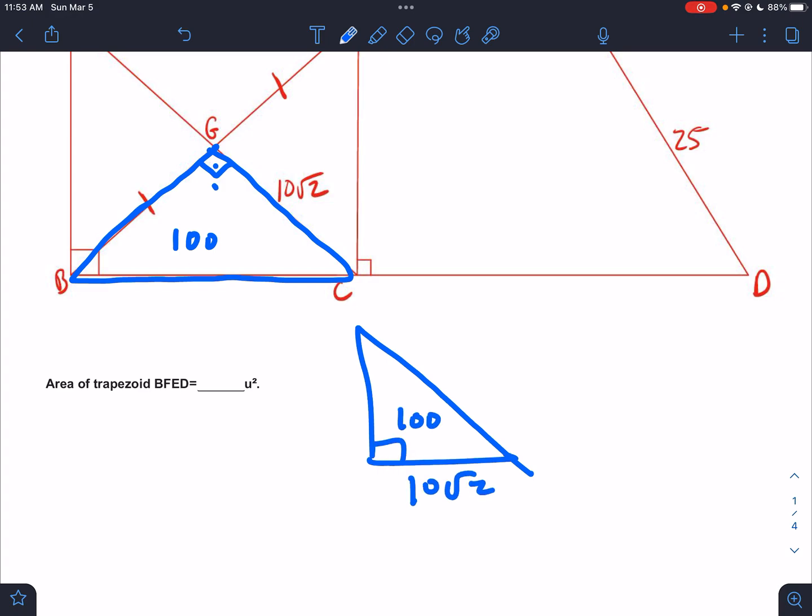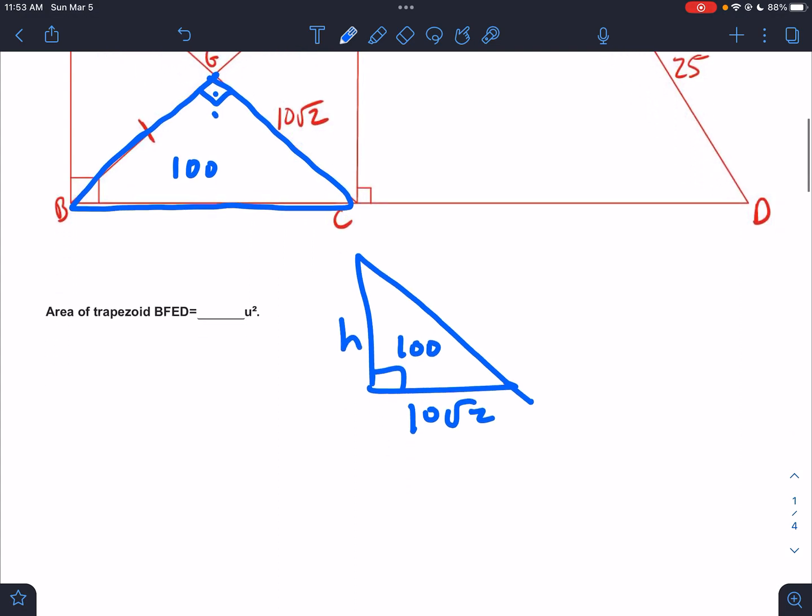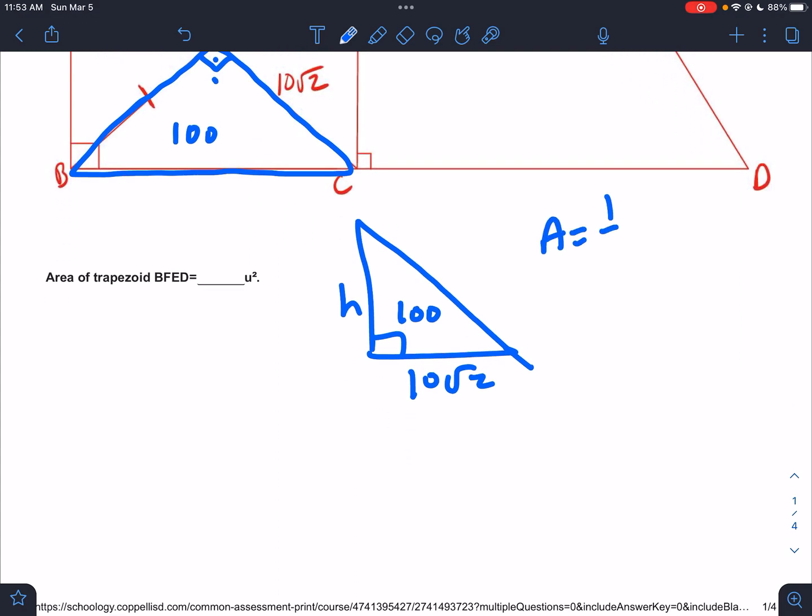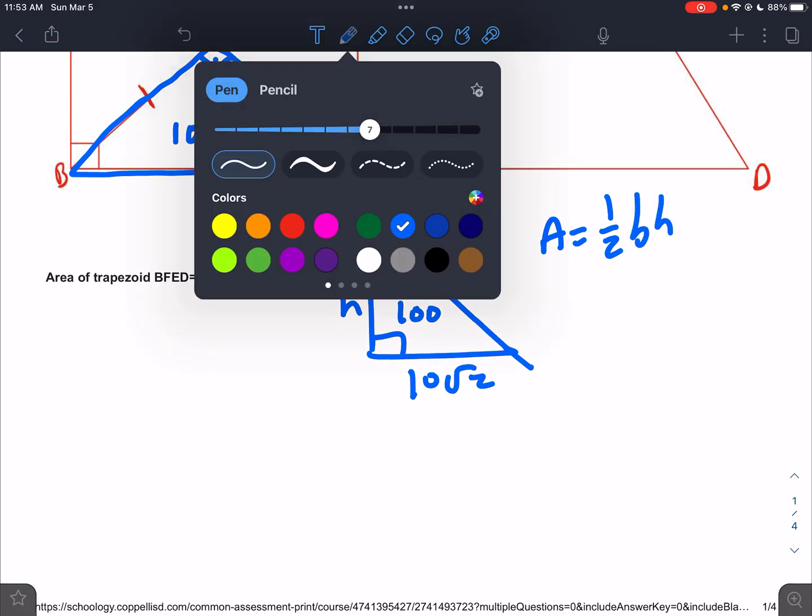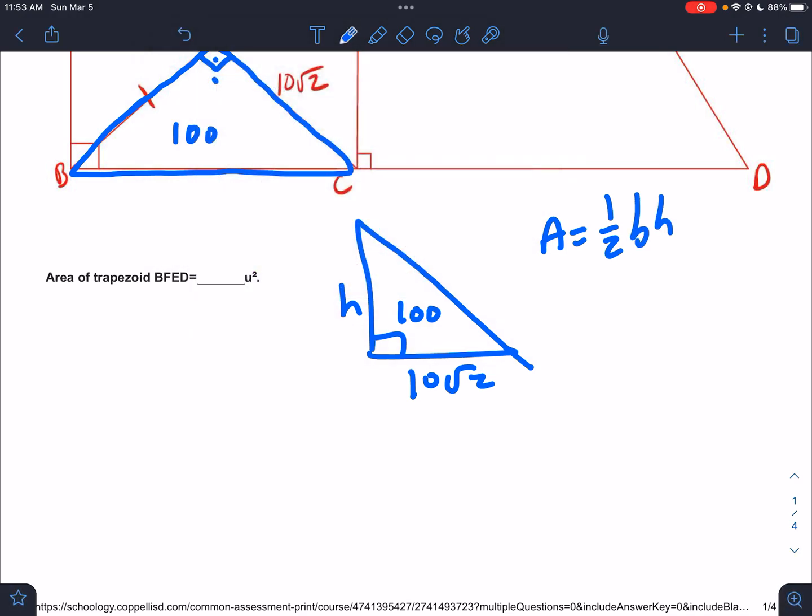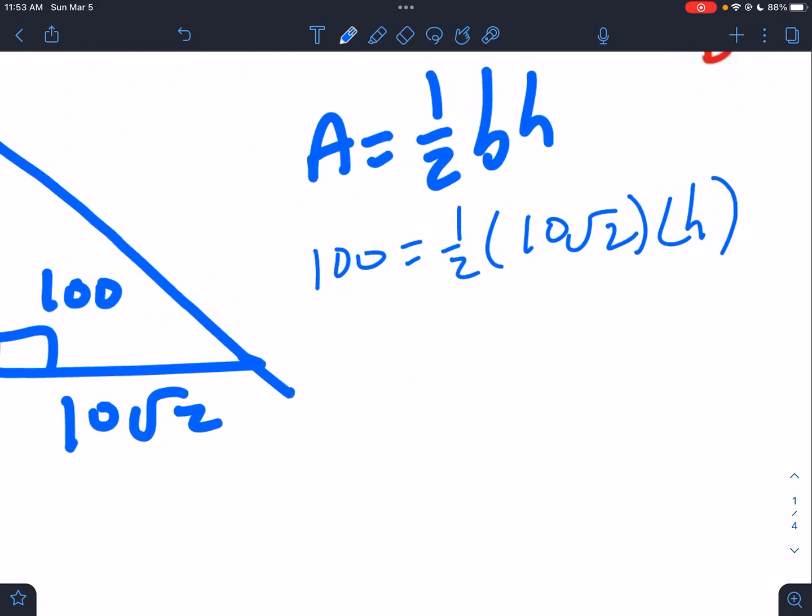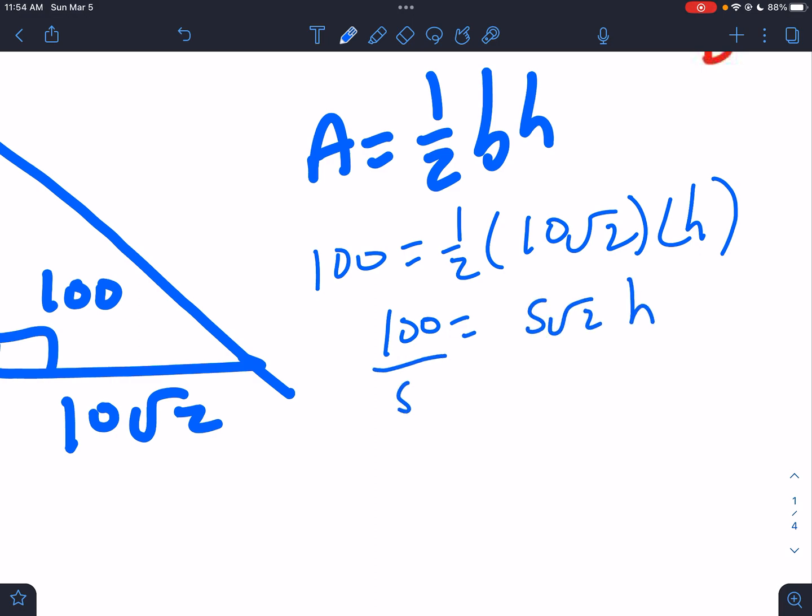So the first thing I'm going to do is use the area of a triangle formula: one half base times height. We know that the area is 100 and we know that the base is 10 root 2, so we need to solve for the height. So in this case we would have half of 10 root 2, so 100 would equal 5 root 2 times the height.